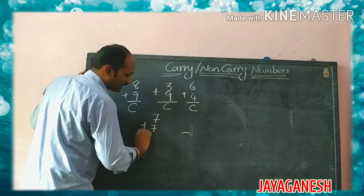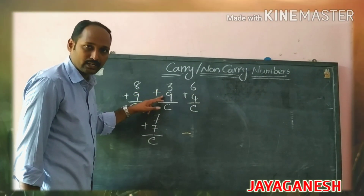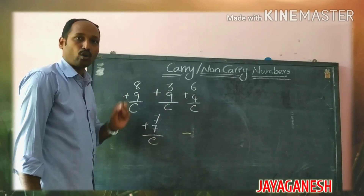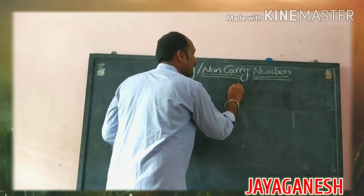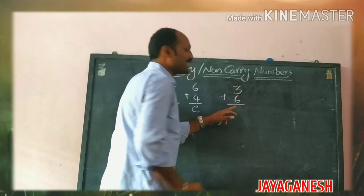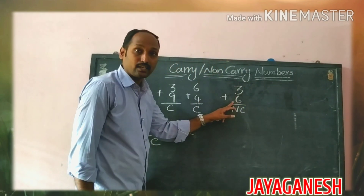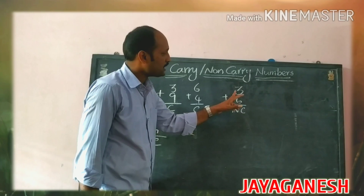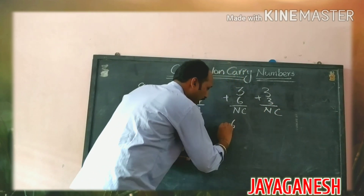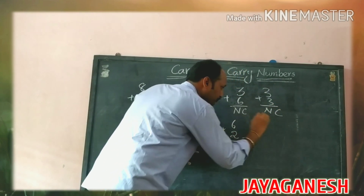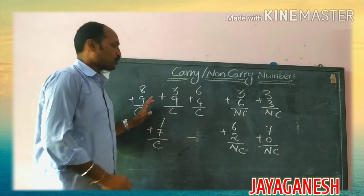Seven plus seven is also called carry. Non-carry means when we add two single digits and get a single-digit answer, that is called non-carry. For example, three plus six equals nine — that is non-carry. Three plus three is non-carry, six plus two is non-carry, seven plus zero is non-carry.